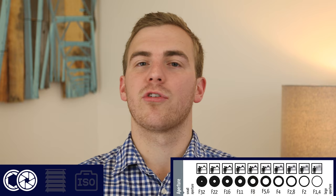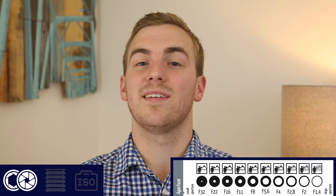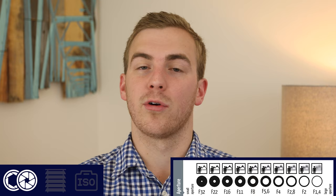Aperture is the measure of how open or closed the iris of your lens is, and it's measured in a term called f-stop. The larger the f-stop number, the more closed down your iris is, which means it lets in less light and the exposure is darker. The smaller your f-stop number, the larger the opening of your iris, meaning it lets in more light and you have a brighter exposure.